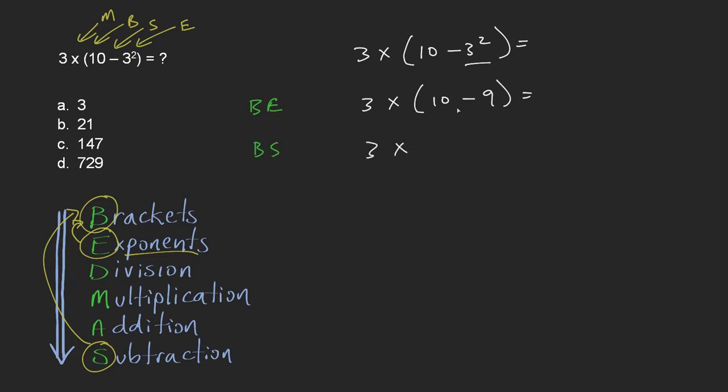And that leaves only multiplication. So 3 × 1 equals 3. And that takes care of our multiplication, and our answer is 3.